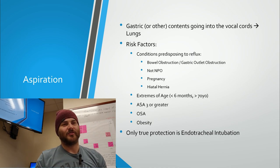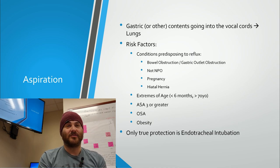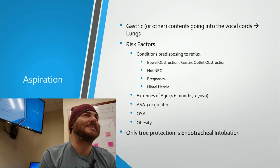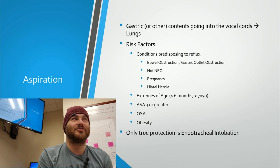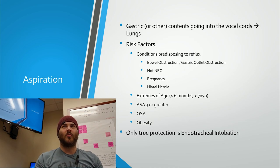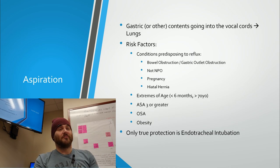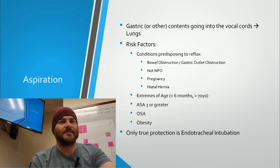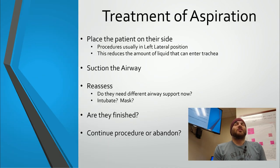The only way to truly prevent aspiration is to have an endotracheal tube in place, and even that doesn't guarantee it — it almost guarantees it, but there are rare conditions where material can pass around the tube into the lungs. Any patient with an open airway is at risk for aspiration.